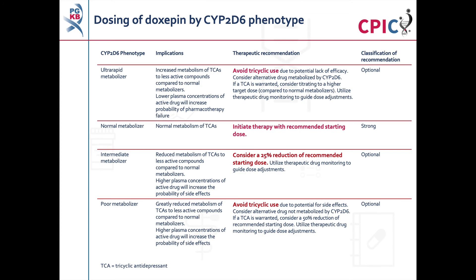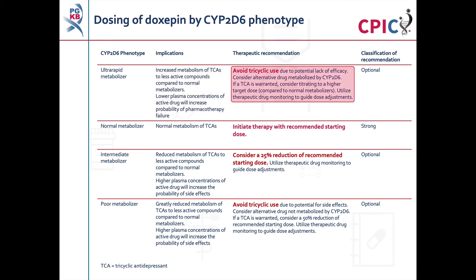These are the CPIC dosing recommendations for doxepine by CYP2D6 phenotype. Patients with a CYP2D6 ultra-rapid metabolizer phenotype will have increased metabolism of TCAs such as doxepine to less active compounds. Use of TCAs should be avoided in these patients. If use of a TCA is warranted, consider titrating to a higher target dose than for normal metabolizers. This is an optional recommendation.